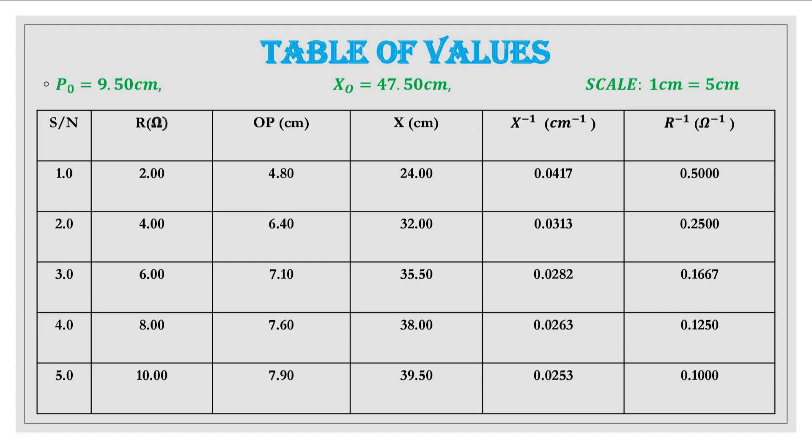So it means that we have to do some conversions. If we convert the scale, the original value OP gotten to X using the scale of 1 cm to 5 cm, we will simply have to just multiply by 5. So when we do that, 4.8 multiplied by 5 will give us 24 and we'll do that also for all other values of OP and that will give us the same values that we see for X in cm.